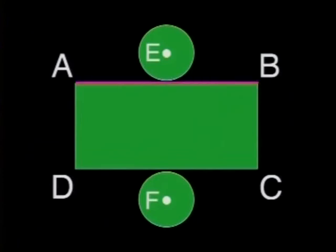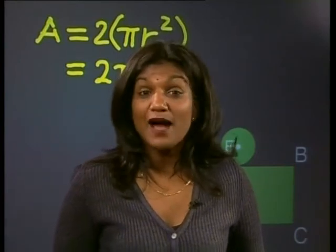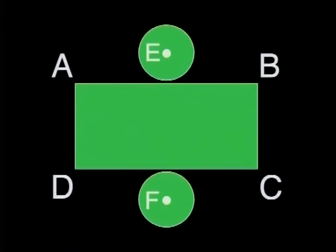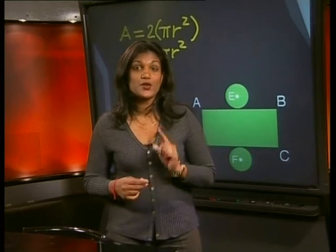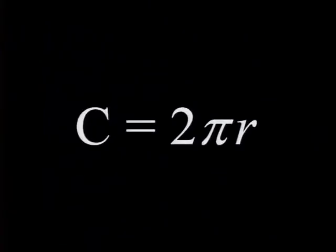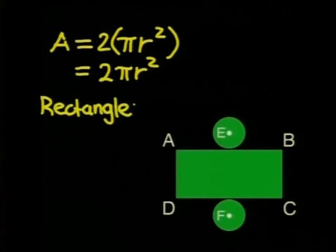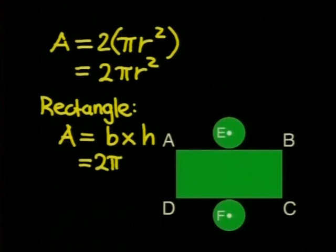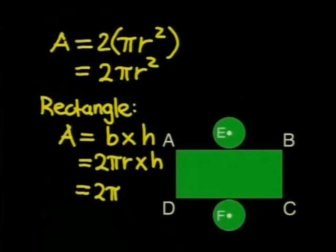Look carefully at base AB — can you find this length somehow? I'm going to show you the animation of making the net again. Look carefully at how the bases are attached to the circle. Did you see that the bases fit perfectly around the circles? So base AB is actually the same as the circumference of the circle. The circumference of the circle is given by the formula 2πr. So the area of the rectangle is base times perpendicular height, where the base equals the circumference 2πr and h is the height of the rectangle, giving us an area of 2πrh.